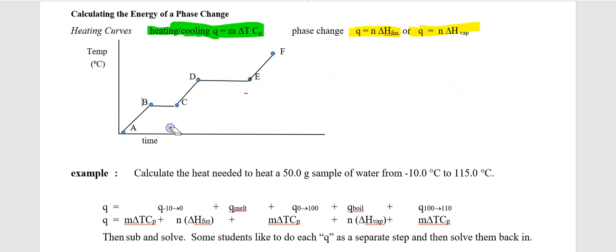I'll keep on working in here. This version is m delta T Cp. This is an m delta T Cp. This is m delta T Cp. Down here, we have n number of moles, vaporization. Down here, we got n number of moles, delta H fusion. You really got to pay attention to where you are in the curve.